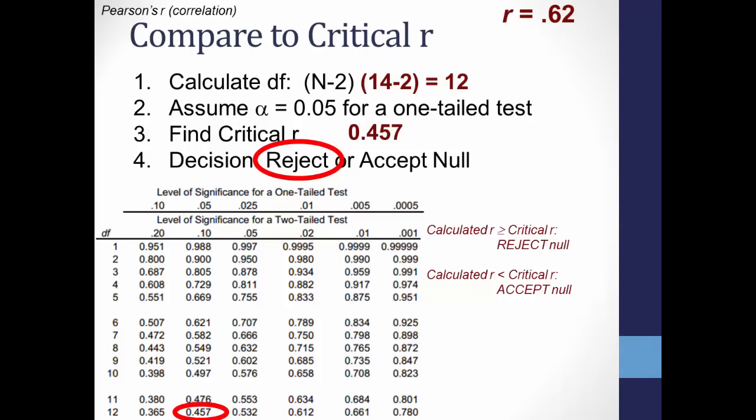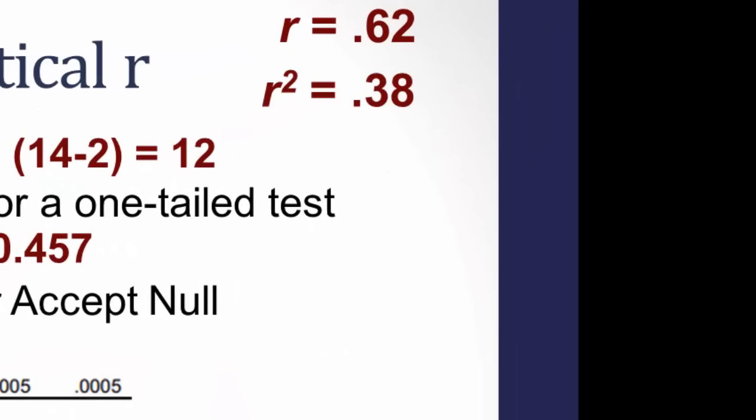We talked earlier about r-squared, which is Pearson's r squared. This refers to what percent of the independent variable x — in this case the number of hours studying — explains what happens to the dependent variable y, the score on the exam. In this case, this positive correlation explains about 38% of the variation. Remember that the closer r-squared is to 1, the better x explains y.